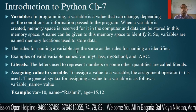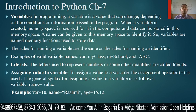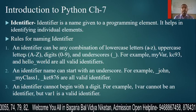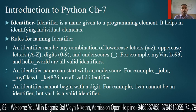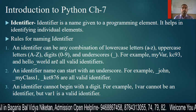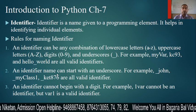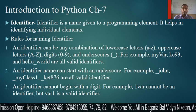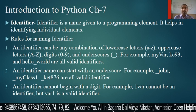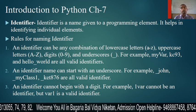The rules for naming a variable are the same as the rules for naming an identifier. An identifier can be any combination of lowercase letters, uppercase letters, digits, and underscores. An identifier name can start with an underscore, but an identifier cannot begin with a digit. For example, '1VAR' is wrong. So, the same rules we use for identifiers we use for variables.